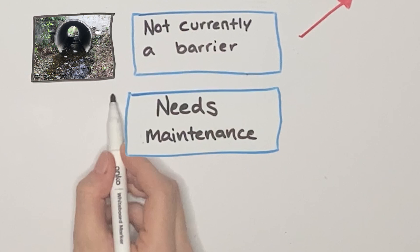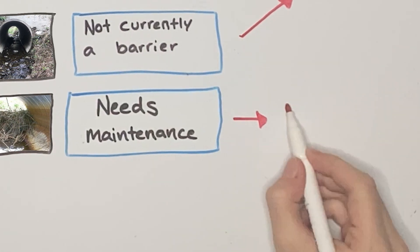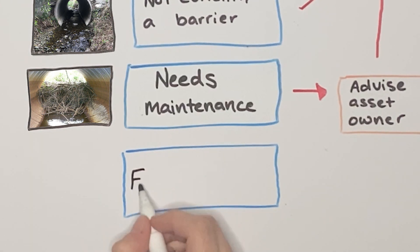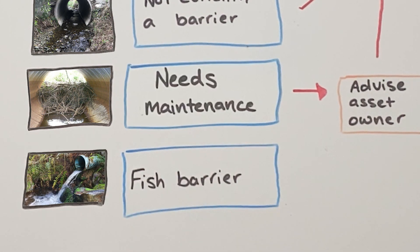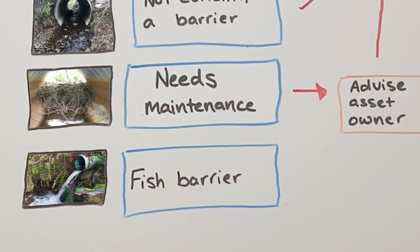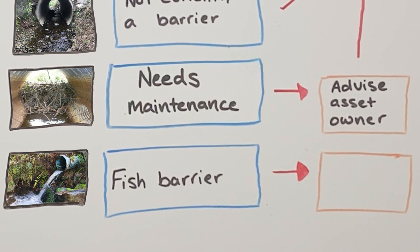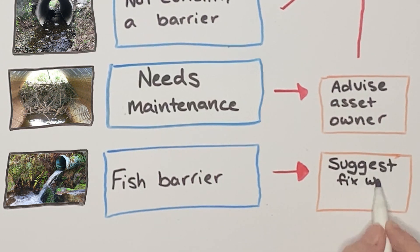Or, needs maintenance — if the structure needs urgent repair, then the asset owner is notified. Or, fish barrier — if the structure is sound but is a barrier to fish, then another algorithm suggests a fix along with the materials required and an estimated cost. Once approved, a work package is put together, usually consisting of multiple barriers that can be remediated as a manageable project.